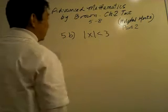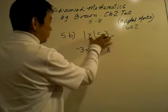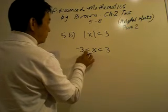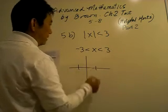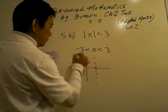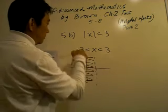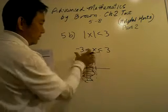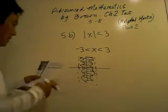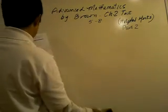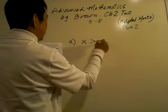5b: absolute value of x is less than 3. We know how to do this — we set up the compound inequality: negative 3 is less than x is less than 3. We drop it down without the absolute value. It has to be bigger than negative 3. To graph this, it's a vertical line at x equals 3 — don't forget it's a dashed line — and x is smaller than 3 but greater than negative 3, so it's a band with dashed lines. If it were 'equal to,' it would be a solid line.